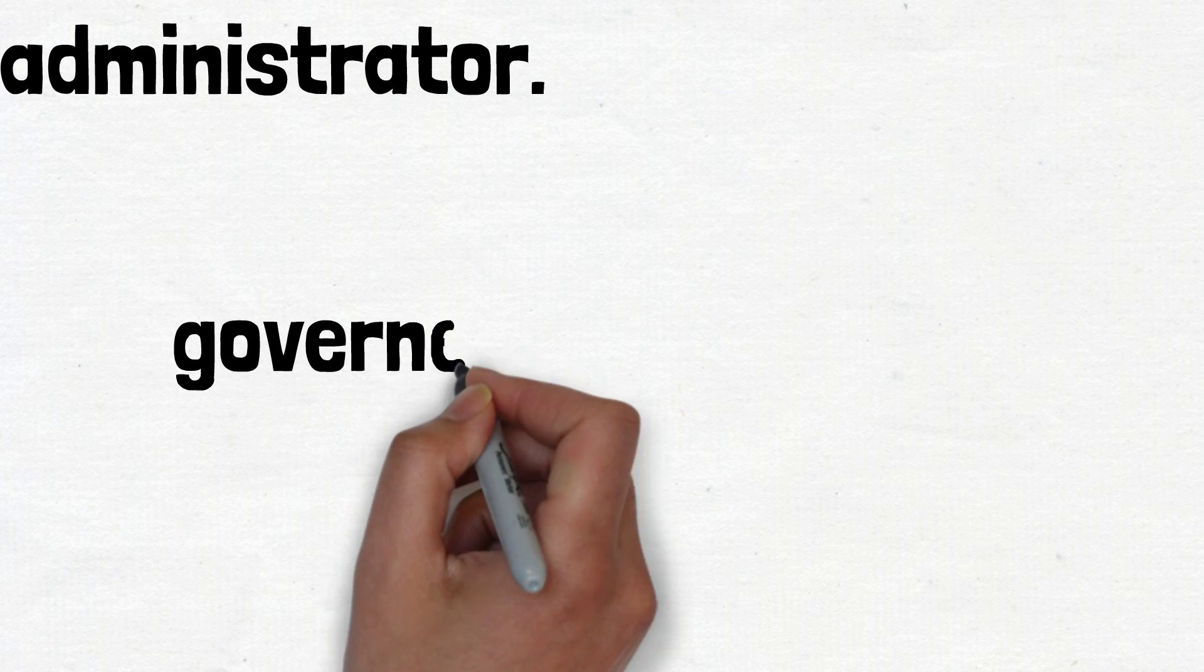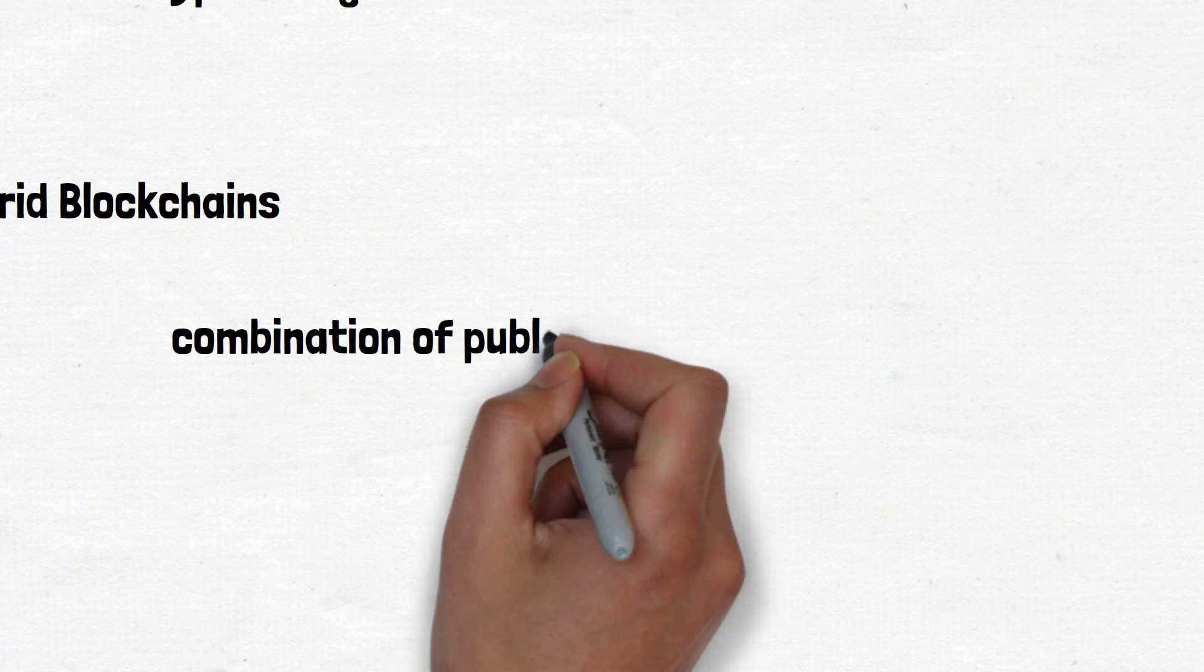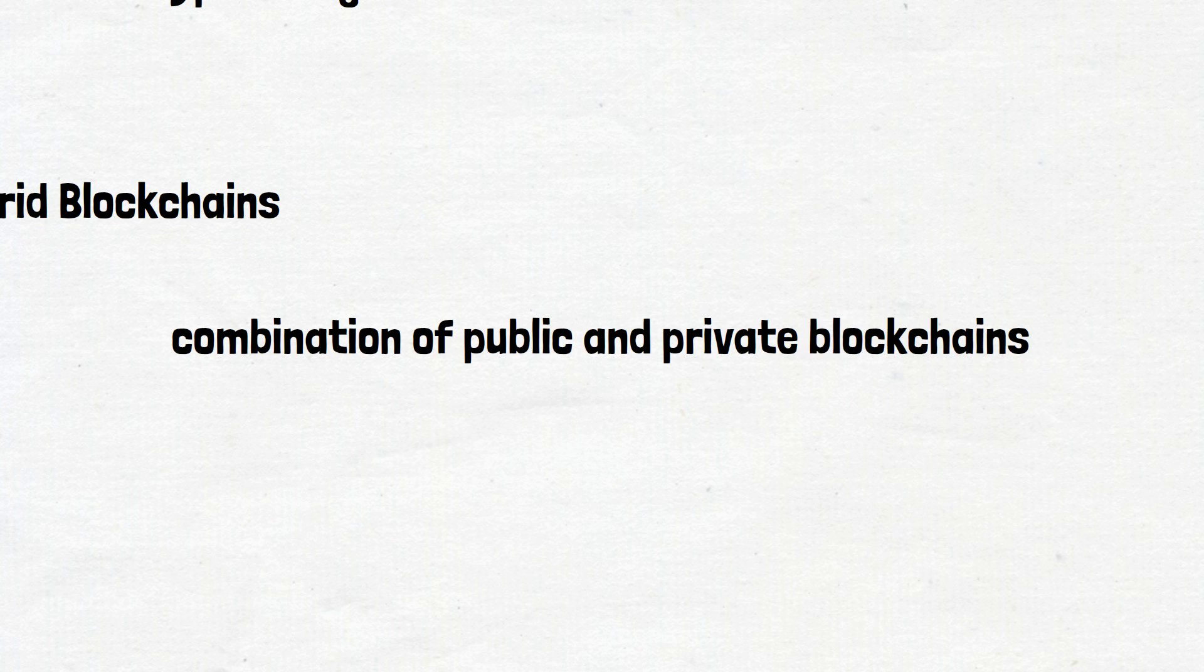Number three is hybrid blockchains. These types of blockchains are a combination of public and private blockchains and contain centralized and decentralized features. For example, Energy Web Foundation, DragonChain, and R3.